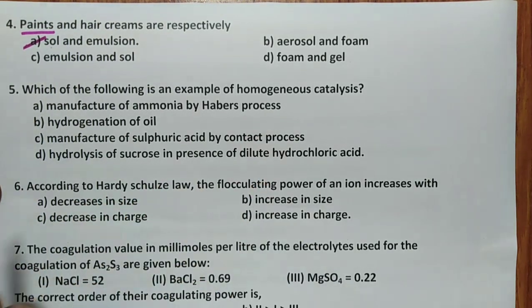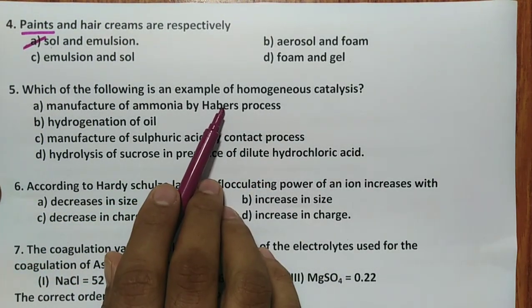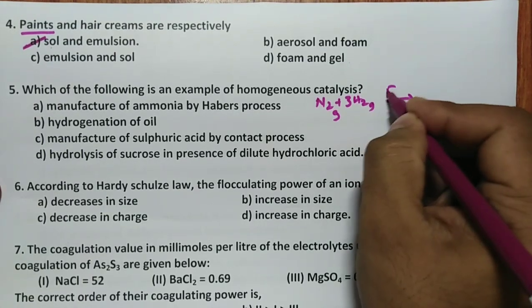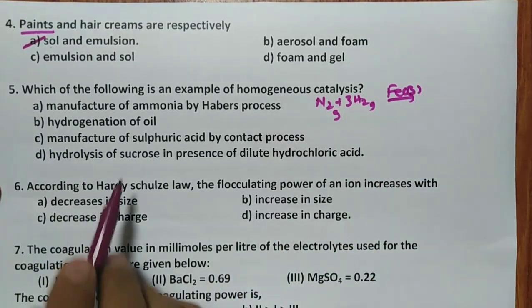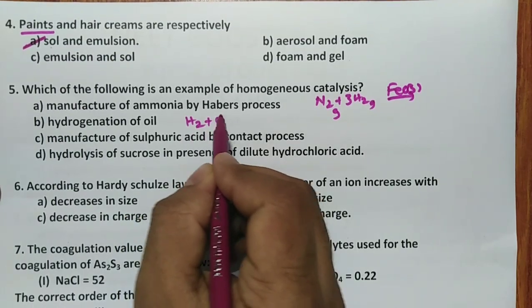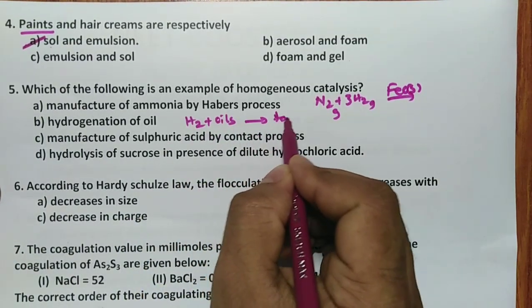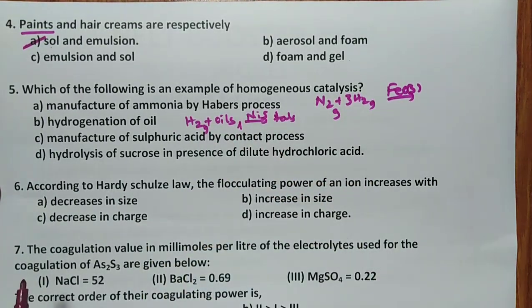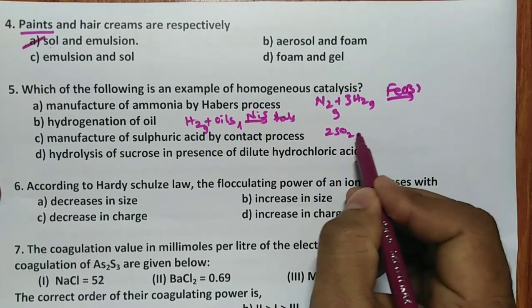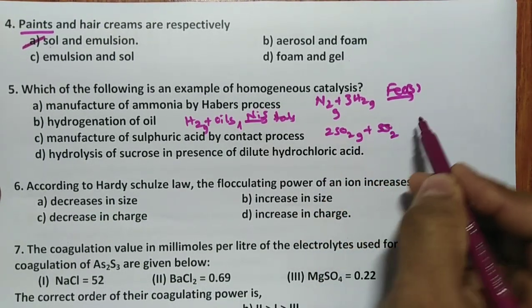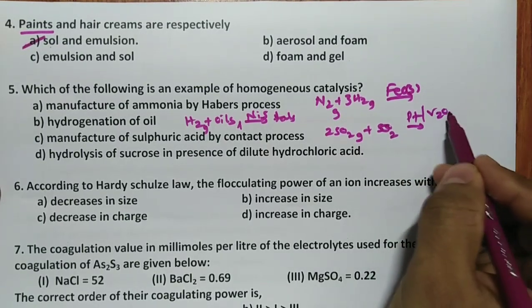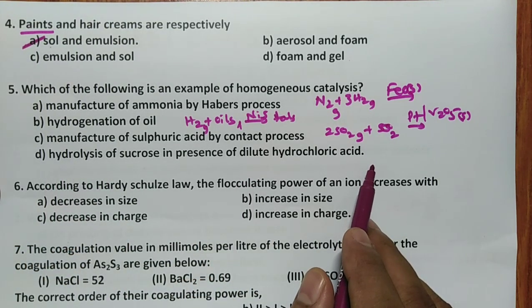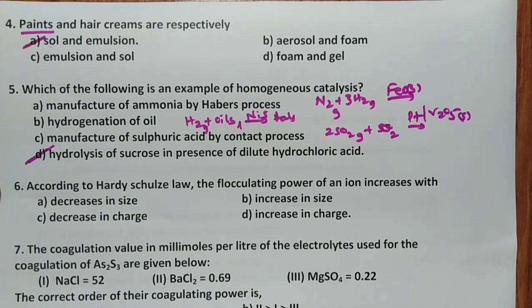Which of the following is an example for homogeneous catalysis? We know that Haber's process: N2 plus 3H2, both are gases and FeO is solid, so it is heterogeneous. Hydrogenation of oils: H2 plus oils give fats, nickel as catalyst is solid, so it is heterogeneous. Sulfuric acid by contact process: SO2 gas with platinum or V2O5 as catalyst solid, so it is heterogeneous. But hydrolysis of sucrose in presence of dilute hydrochloric acid is homogeneous catalysis. So answer is D.